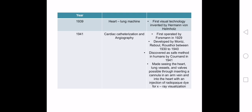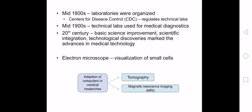By 1939, the heart-lung machine — a visual technology also attributed to Hermann von Helmholtz — was developed. In 1941, cardiac catheterization and angiography, first operated by Forssmann in 1929 and developed by Moniz and others between 1930 and 1940, was discovered as a safe method in humans by Cournand in 1941. This made seeing the heart, lung vessels, and valves possible through inserting a cannula in an arm vein and into the heart with an injection of radiopaque dye. In the mid-1800s, laboratories for analyzing medical specimens were organized by chemical experts, and technical laboratories regulated by the CDC began to be used for medical diagnosis in the United States by the mid-1900s.